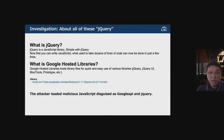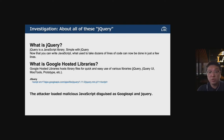jQuery is a useful library that helps site programmers simplify their code. Google hosts very useful libraries like jQuery for web programmers to use via their API. The attacker loaded malicious JavaScript faking as Google API and jQuery.